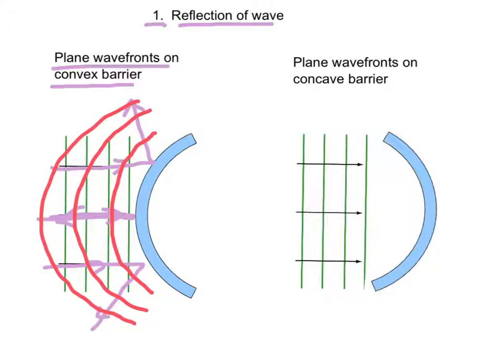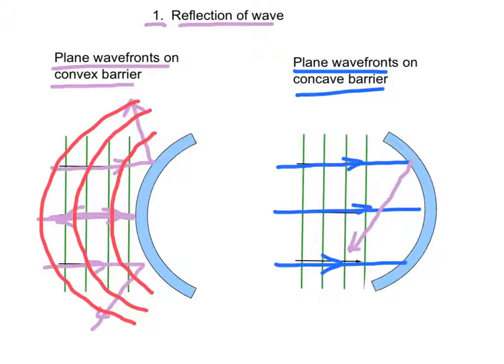Next, for a plane wave front incidence on a concave barrier, again, by law of reflection, we have the incidence waves will be reflected in the direction shown. Hence, the reflected wave fronts would be concave.